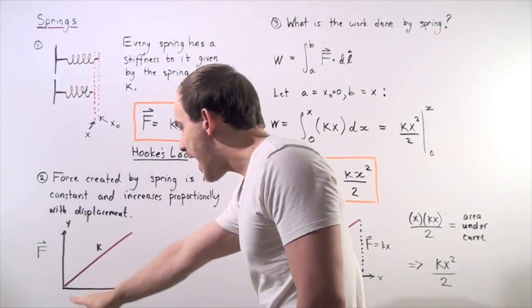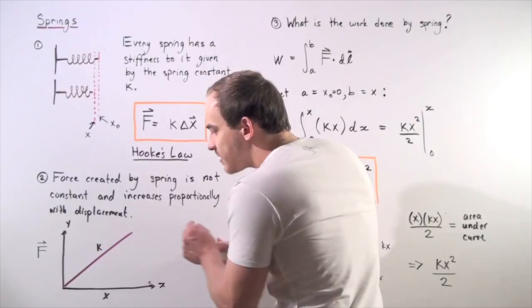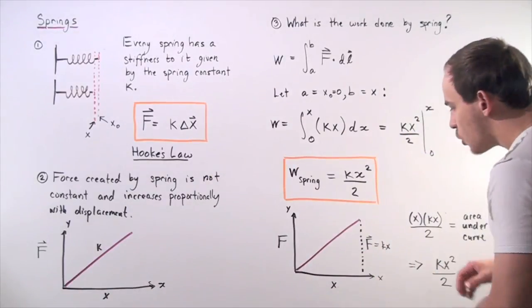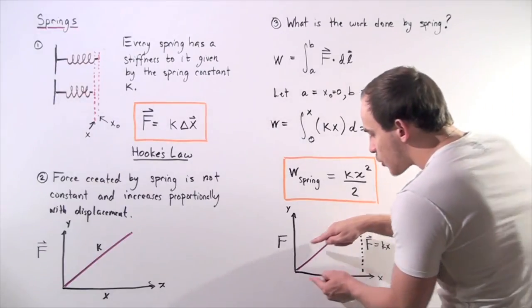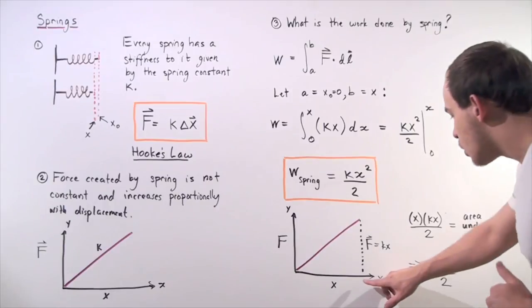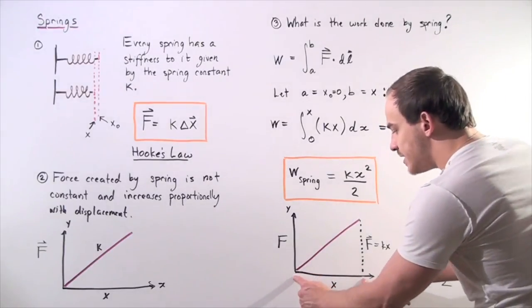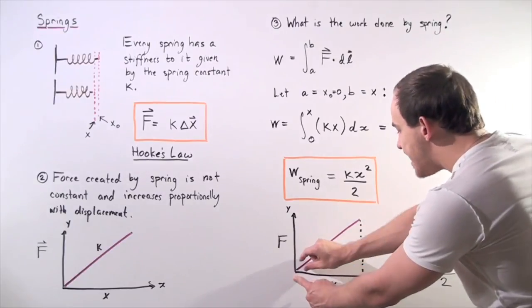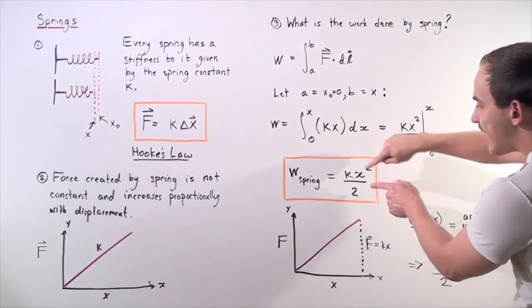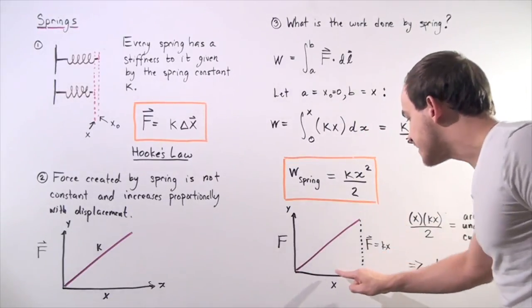If we go back to our graph, notice that if we take the area underneath this curve as shown here, so we draw the following triangle and we integrate, which is essentially what we're doing in this case. So if this final position is x, this initial position is zero and we integrate, we take the area of this, this area will be exactly identical to this. And notice that because this is a triangle,